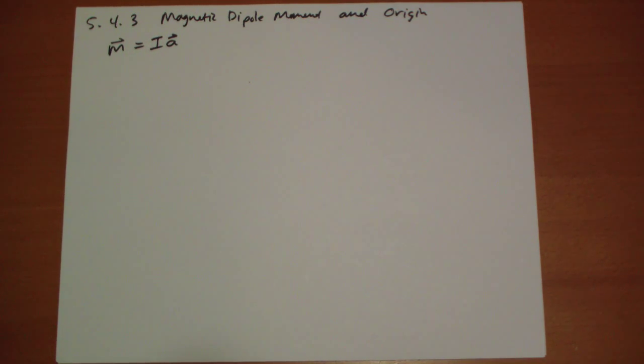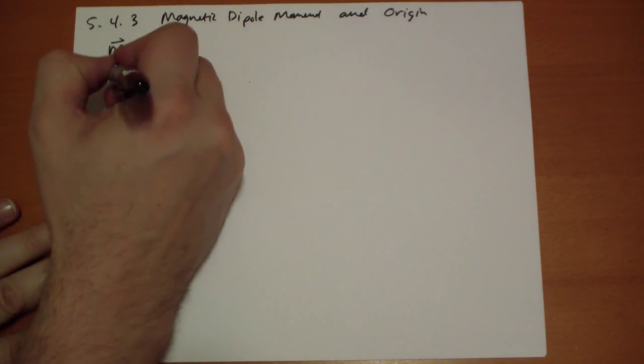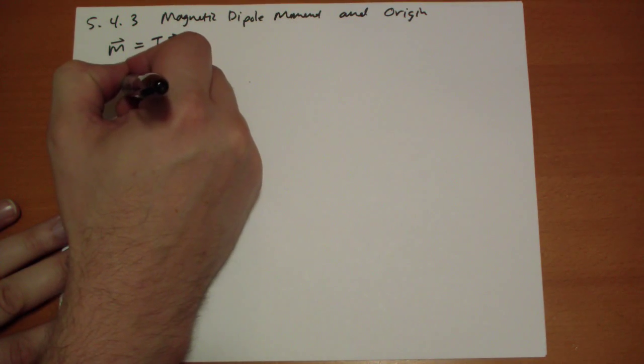So, if we put the loop at the origin, then we can calculate the vector potential due to a pure dipole.